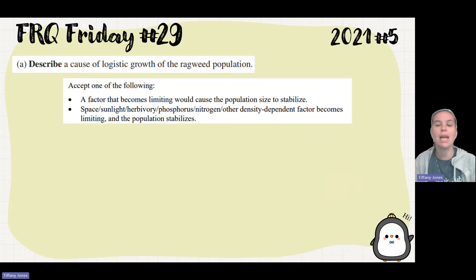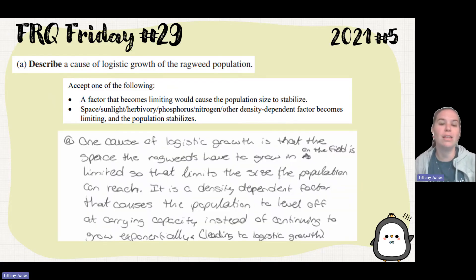You had to talk about the factor being limiting, and that would cause our population size to stabilize. You had to talk about either space, sunlight, herbivory, phosphorus, nitrogen, or some other density-dependent factor becomes limiting, and then the population will stabilize. The student said one cause of logistic growth is that the space the ragweeds have to grow in on the field is limited, so that limits the size the population can reach. It is a density-dependent factor that causes the population to level off at carrying capacity instead of continuing to grow exponentially, leading to logistic growth.